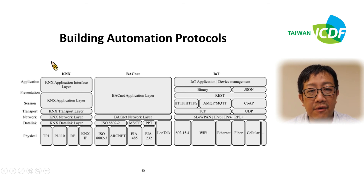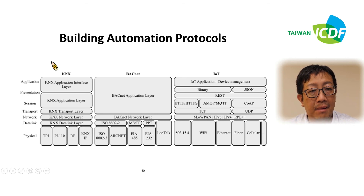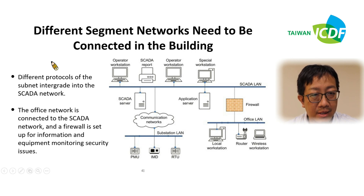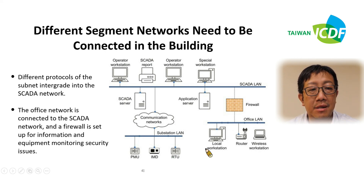Different segment networks need to be connected with different protocols. The office network is connected to the SCADA network, and a firewall is set up for equipment monitoring and security issues.